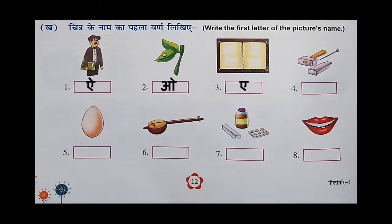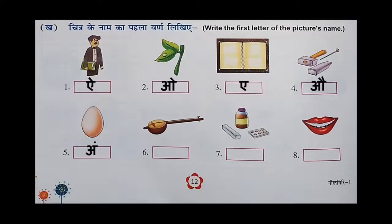Yes. What is the fourth picture? These are tools. What is tools in Hindi? Aujar. So au se aujar — you have to write Au in the fourth box. And the fifth picture is anda — what is anda? Egg, right? Ang se anda. And the sixth one is Aura — au se Aura, so you should write A in the sixth box. What is the seventh one picture?